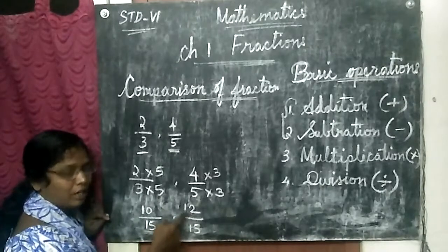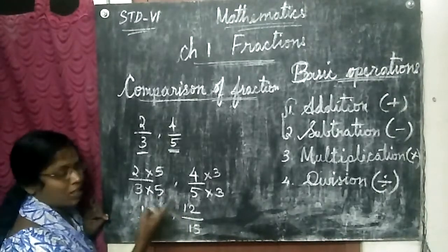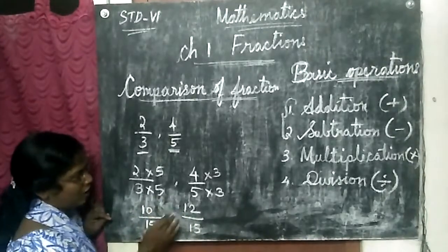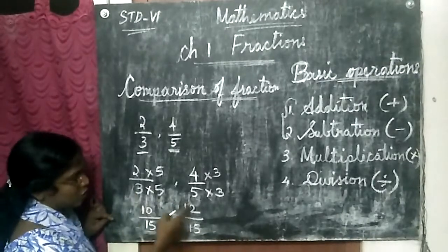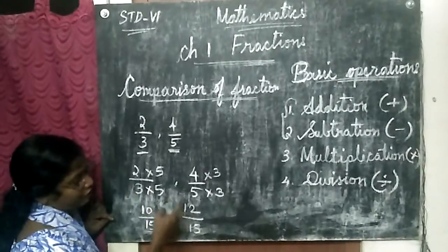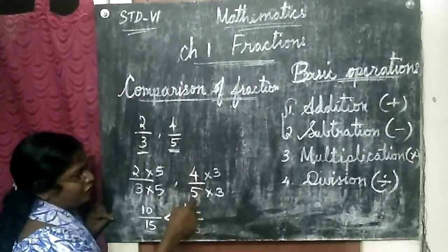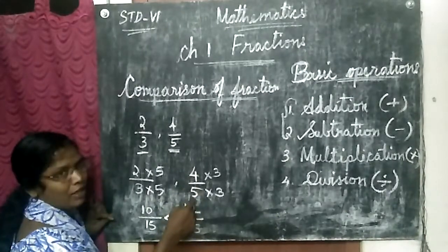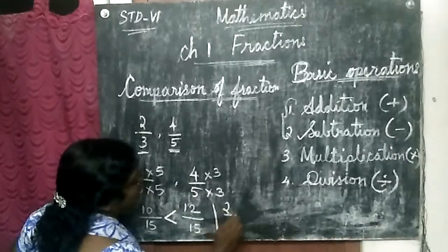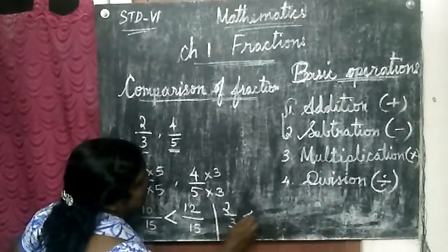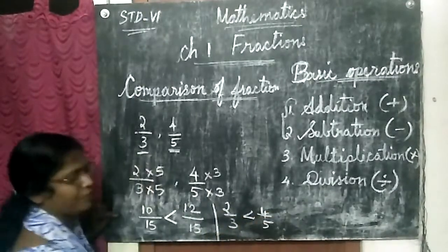Ten is greater or twelve is greater? Twelve is greater. So twelve by fifteen: since twelve is greater, it came from the fraction four by five. Therefore two by three is lesser than four by five.